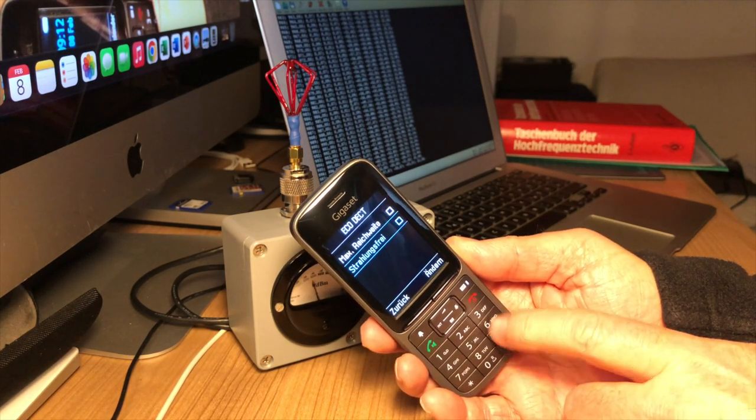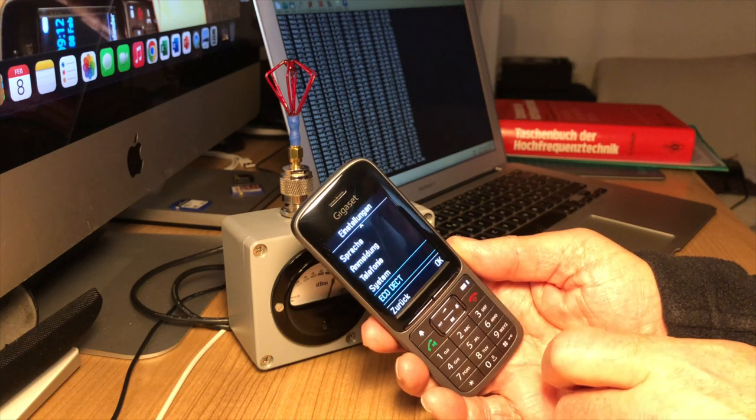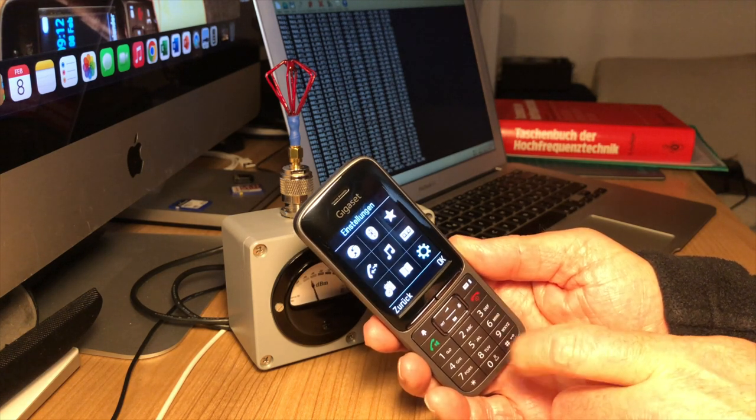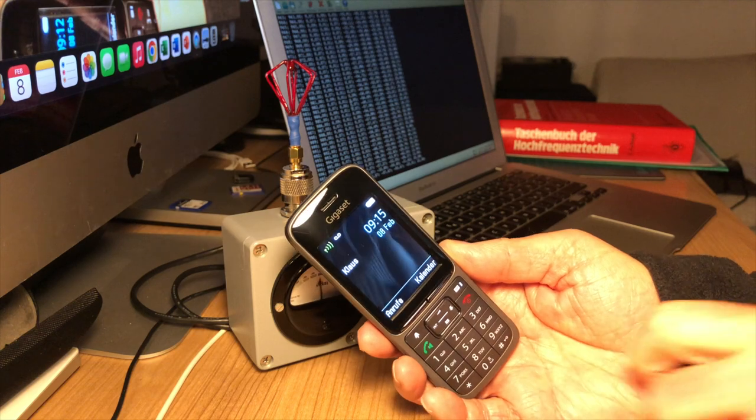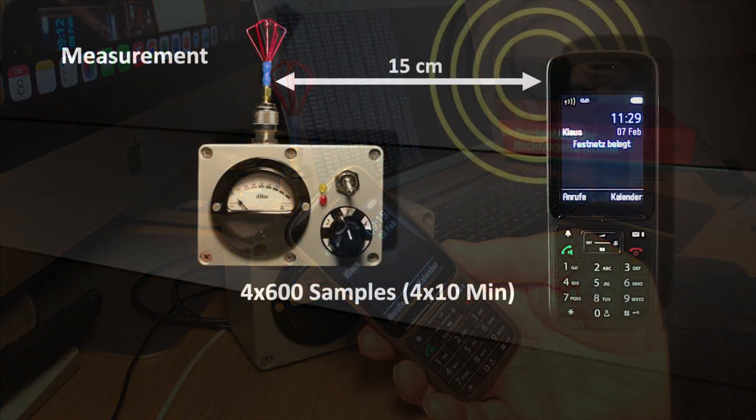I am particularly interested in the difference in transmission power between the maximum range mode and the eco mode. To do this we fix the handset at a distance of 15 cm from my RF measuring device, which I have already presented and used several times in previous episodes.